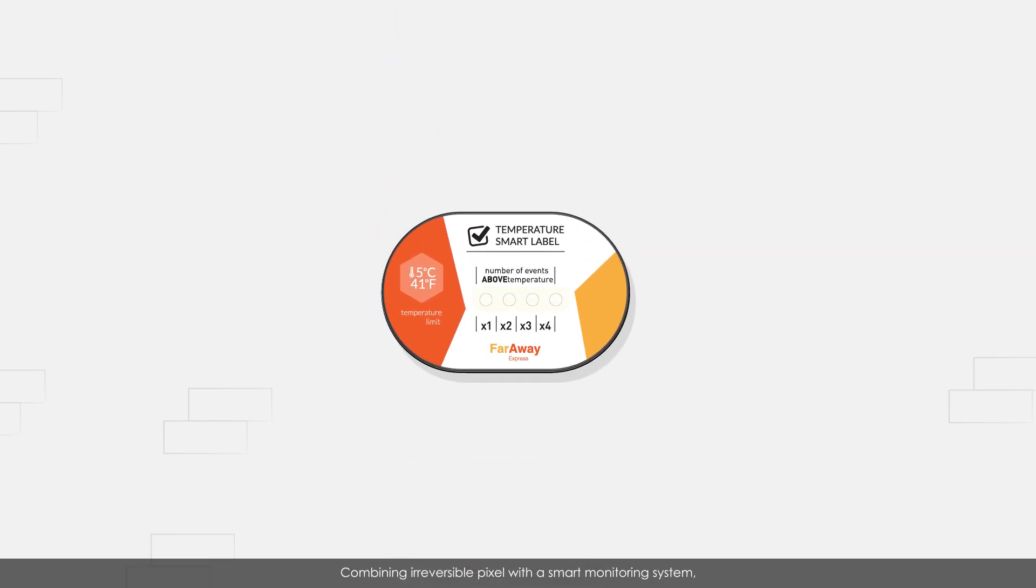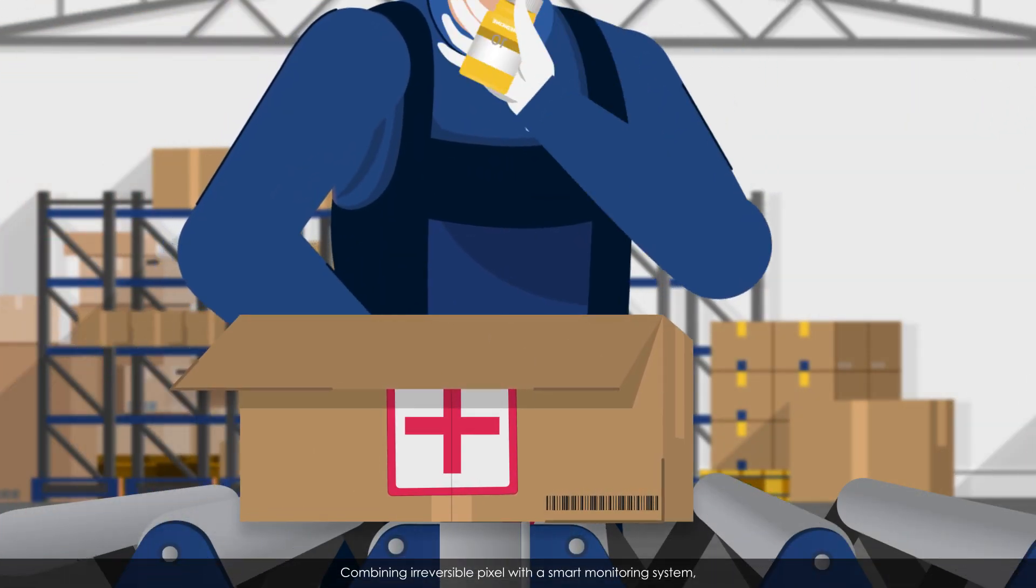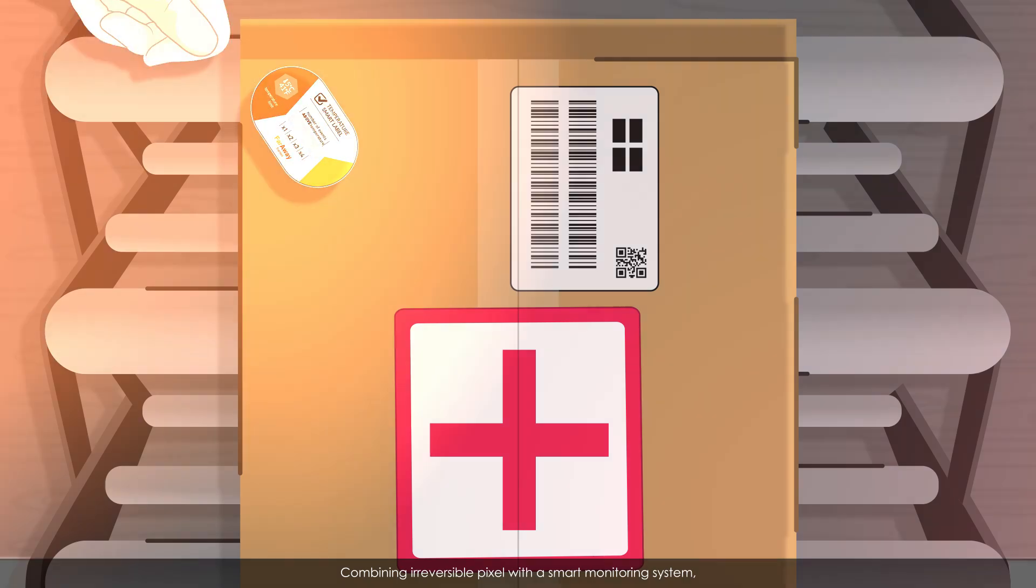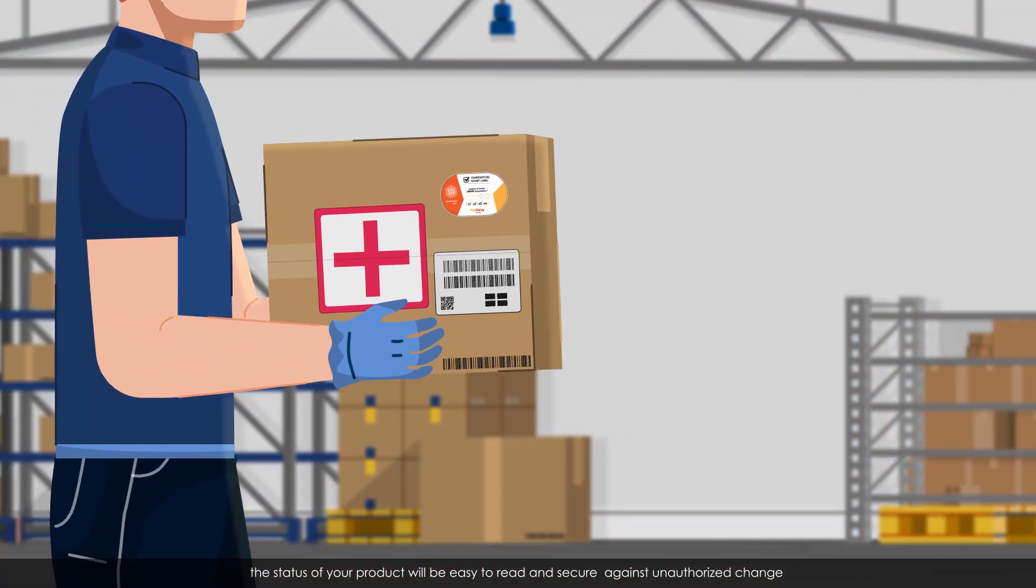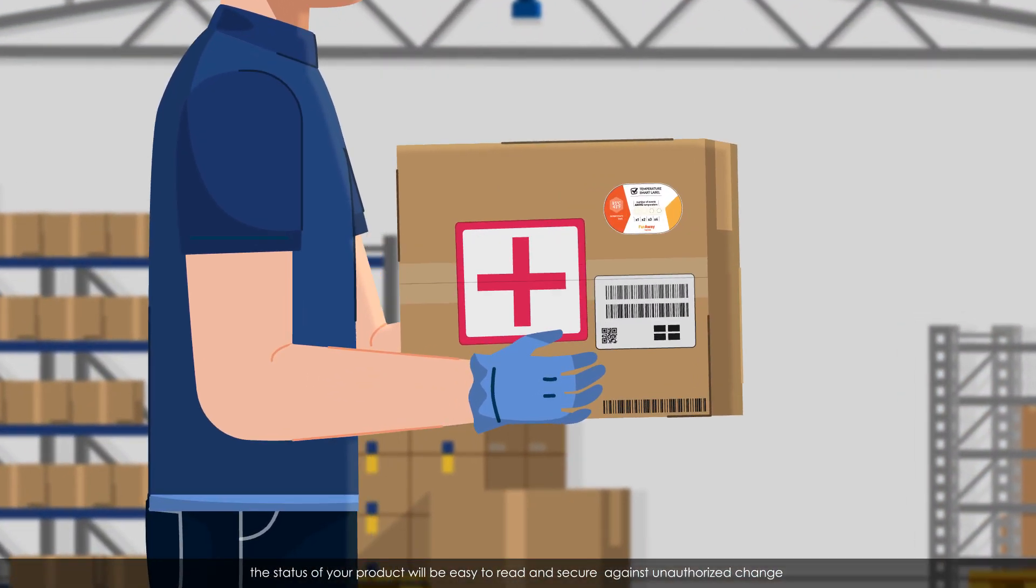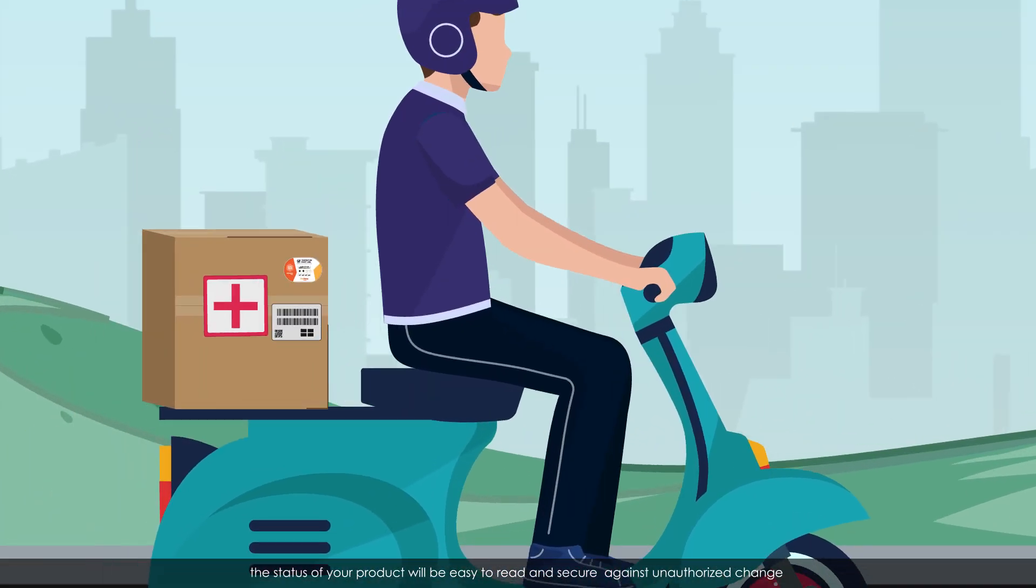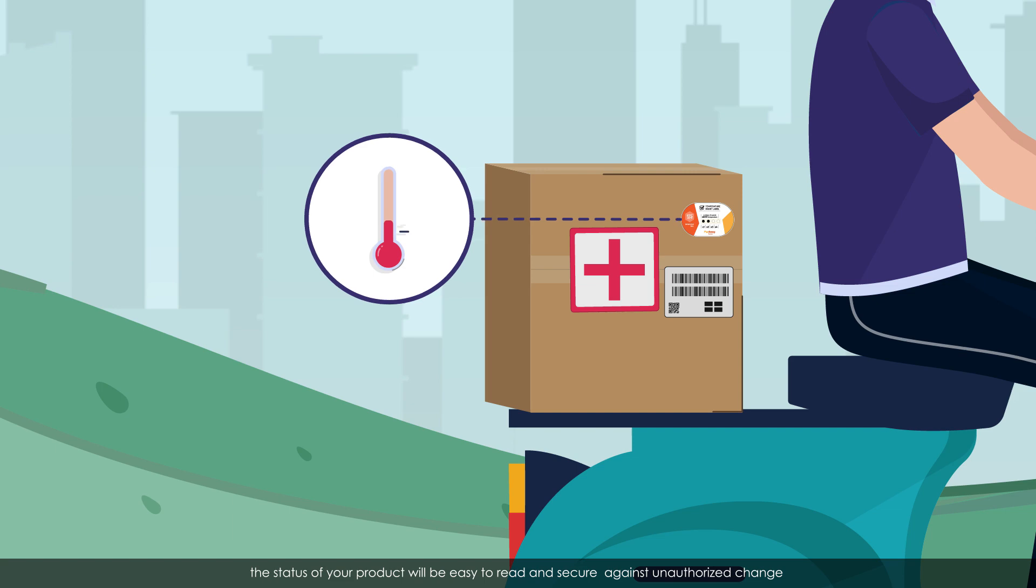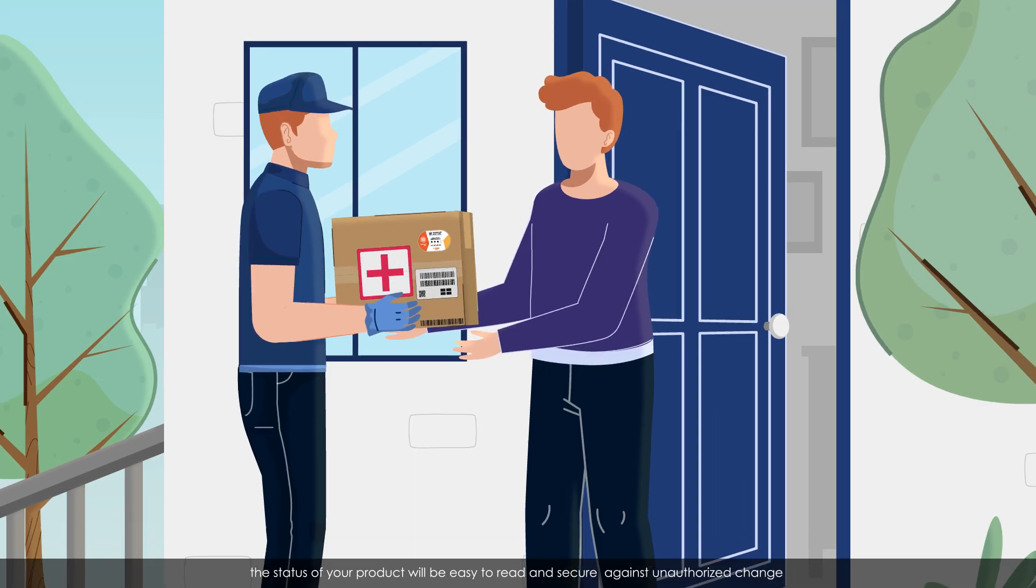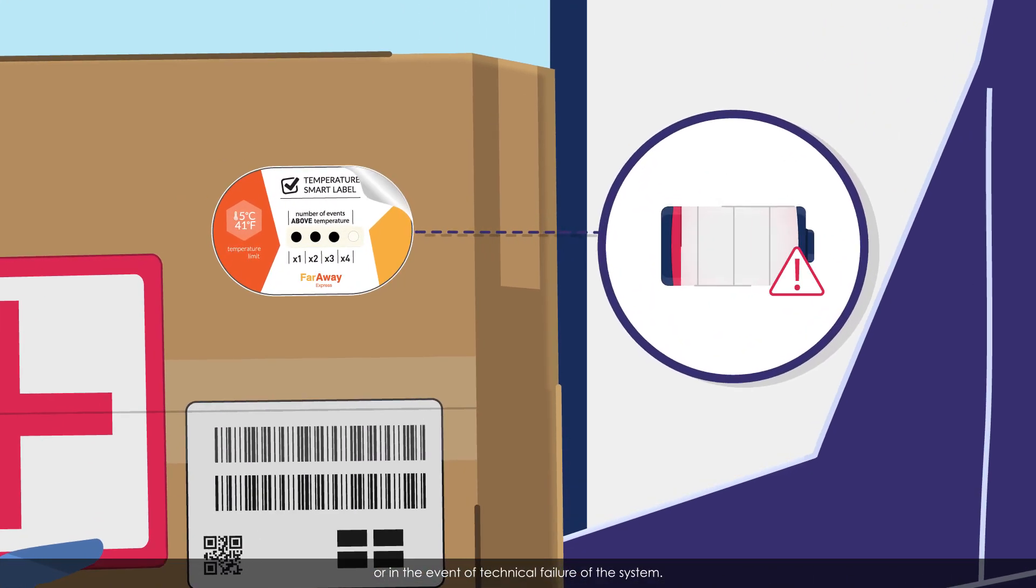Combining Irreversible Pixel with a smart monitoring system, the status of your product will be easy to read and secure against unauthorized change or in the event of technical failure of the system.